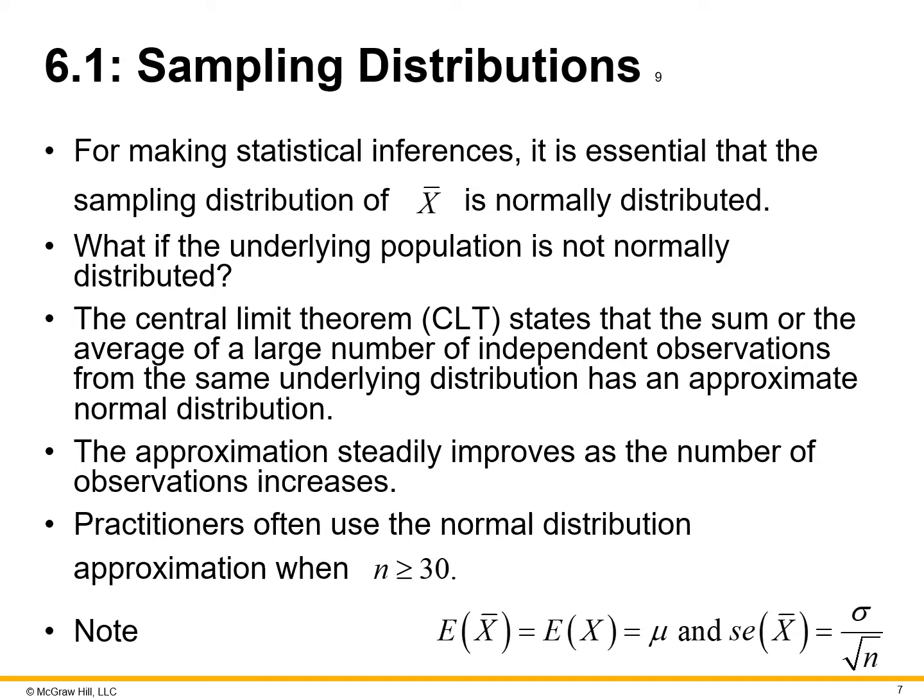To take it a step further in sampling distributions to make statistical inferences, it is essential that the sampling distribution of X-bar is normally distributed. The central limit theorem (CLT) states that the sum or average of a large number of independent observations from the same underlying distribution has an approximate normal distribution, and the approximation steadily improves as the number of observations increases. Practitioners often use the normal distribution approximation when the number of observations is greater than or equal to 30.